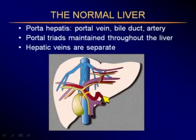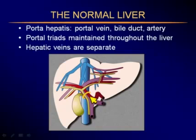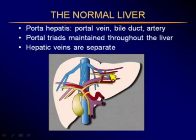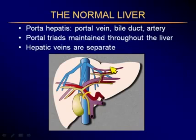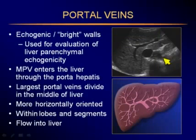There are four tubular systems that go throughout the liver: the portal venous system, the hepatic arterial system, and the bile ducts — intimately related at the porta hepatis, joined together as partners in portal triads, staying together throughout their entire branching throughout the liver. The fourth tubular system is the hepatic veins, which drain the liver superiorly towards the IVC. They stand alone without anything associated with them. Portal triads maintained throughout the liver are partially what causes the reflectivity of portal vein walls.